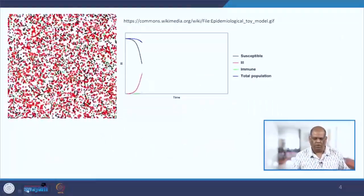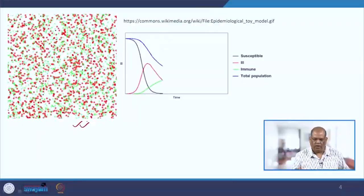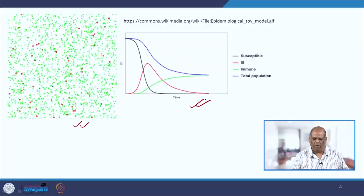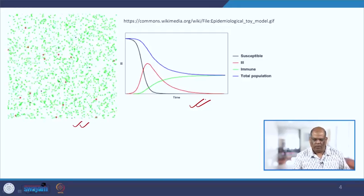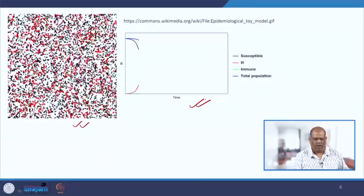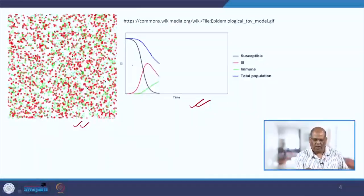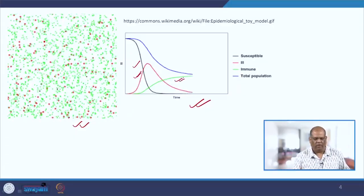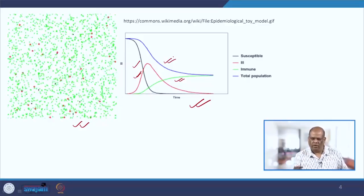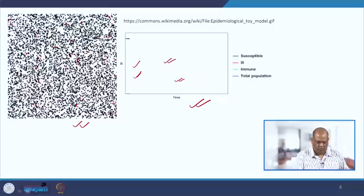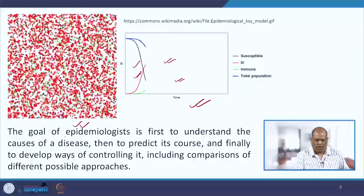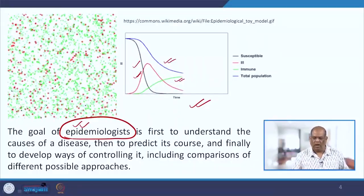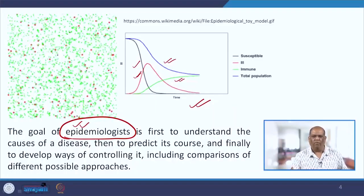Before that, let us look at this graphic. The left-hand panel shows the population getting infected, and the right-hand side gives the graph of how the population behaves. It starts with black spots — the susceptibles — who get infected very fast, shown as red. You can see the susceptible count coming down, the infectious growing up. The green represents the recovered, and the top line is the total population that has been infected. This is what the mathematical model gives you. The goal of epidemiologists is to first understand the cause of the disease, then to predict its course, and finally to develop a way of controlling those diseases.